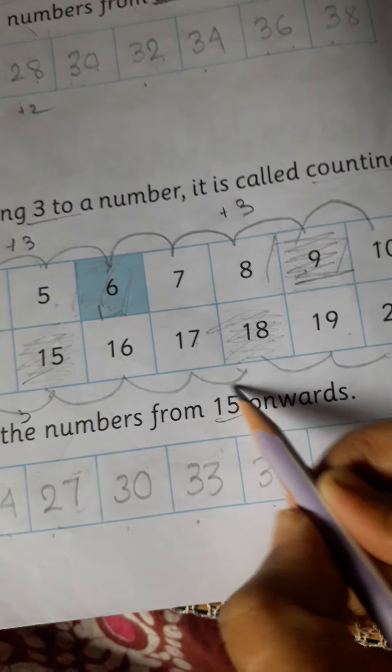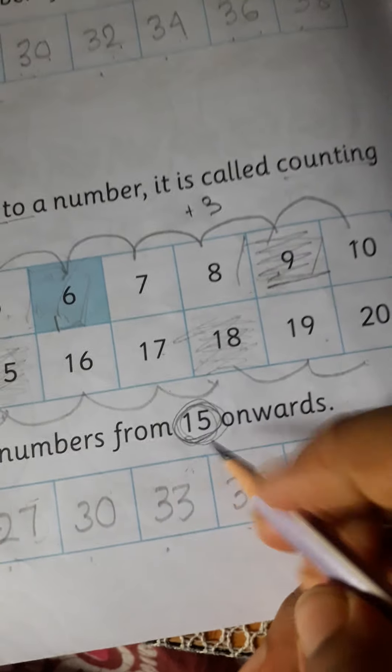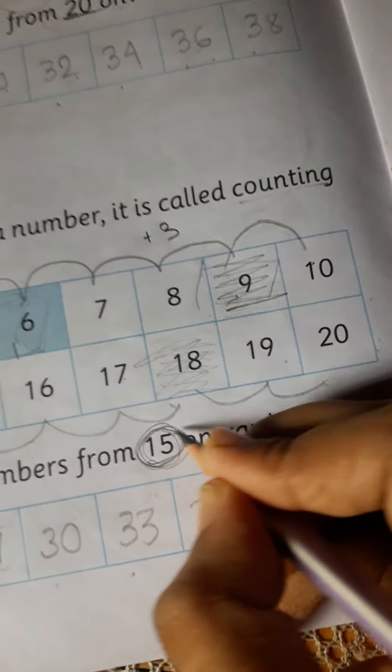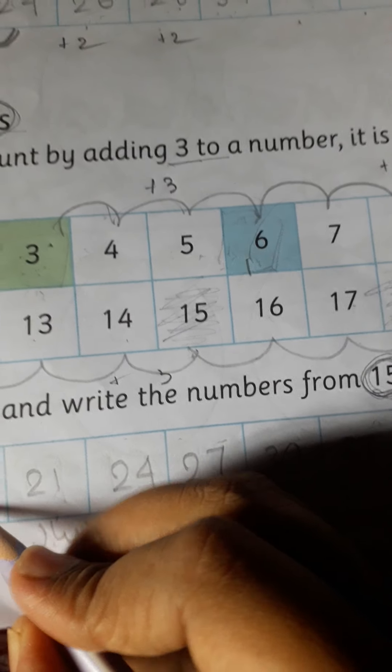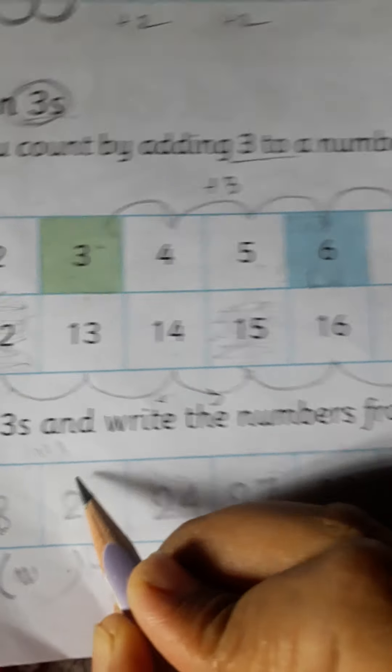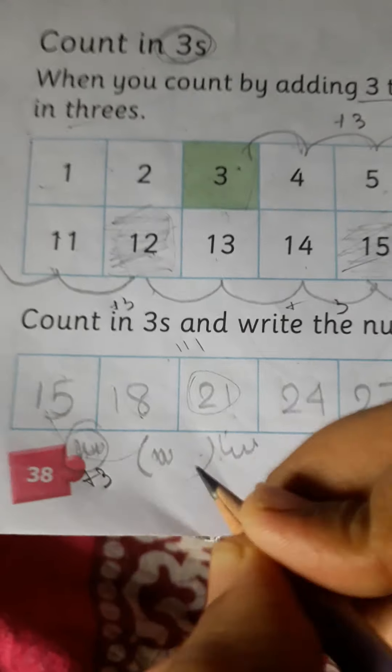And write the numbers from 15 onwards. So we have to write first 15, then count 3s. 15, 15 plus 16, 17, 18, so 15 upon 18. Then 19, 20, 21, 21. Because we have to count 3s.